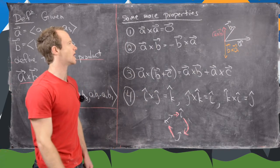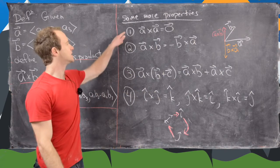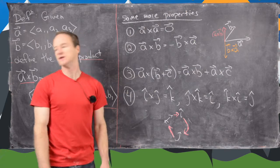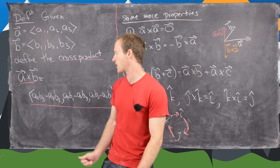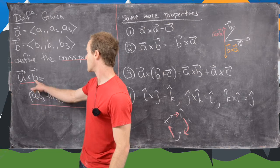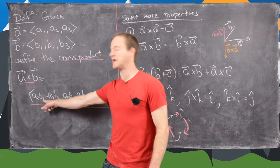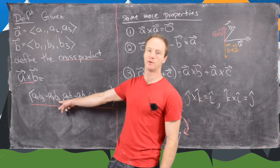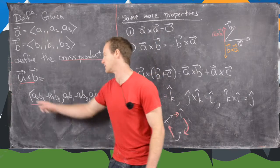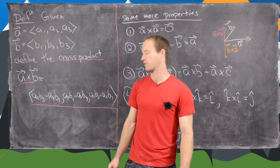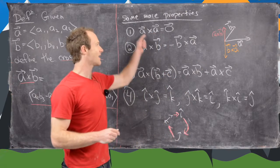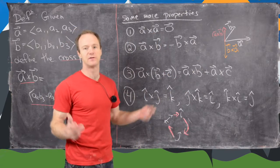Here are some more properties of the cross product. If you take a vector and cross it with itself, you get zero. You can verify this with the formula: in that case b3 equals a3 and b2 equals a2, so every component like a2 b3 minus a3 b2 becomes zero. So a cross a equals the zero vector.